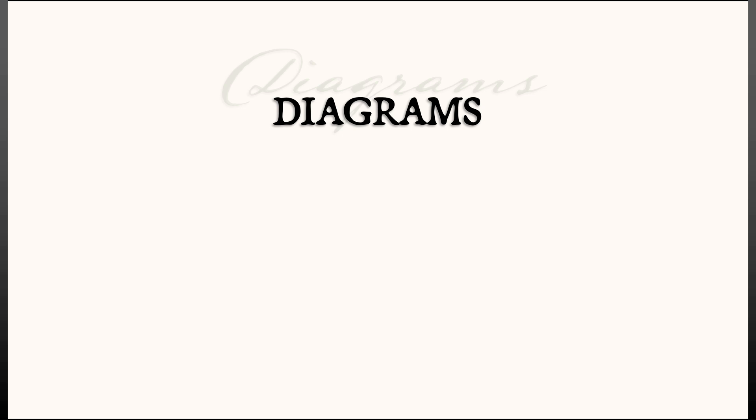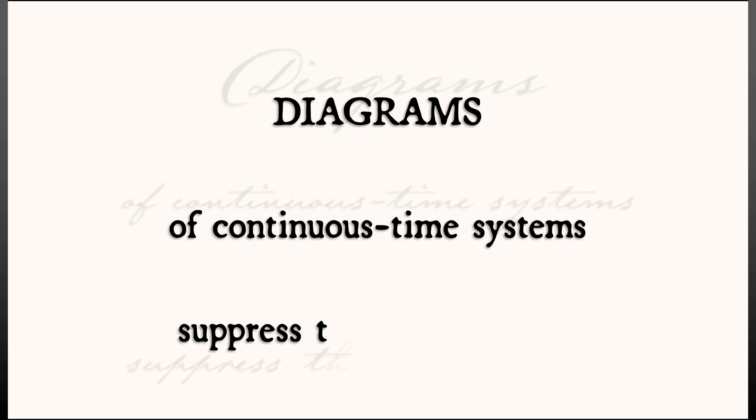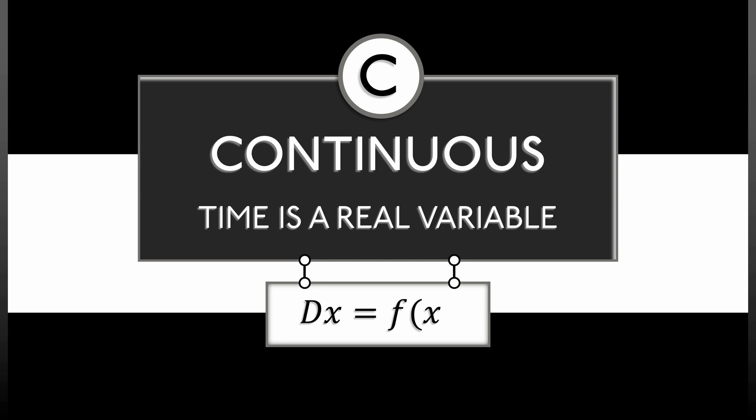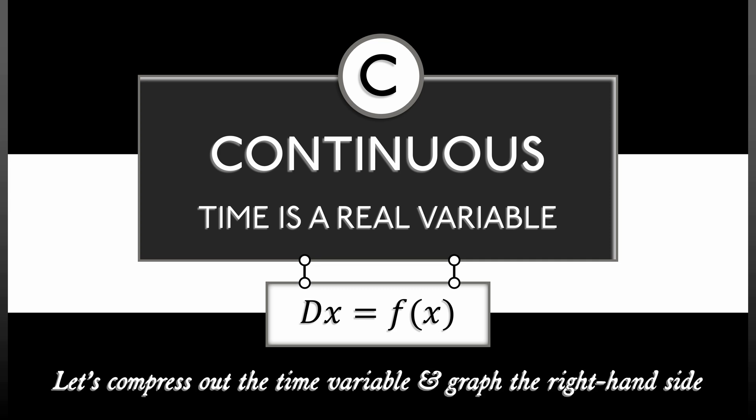Our next step is to look at what we're going to call diagrams of continuous time systems. These are images that suppress out the time variable. Now what do I mean by that? Well, we're in continuous time dynamics. That means we're looking at systems of the form dx equals f of x. So what we're going to do is instead of focusing on the time variable, we're going to focus on that right-hand side f of x.